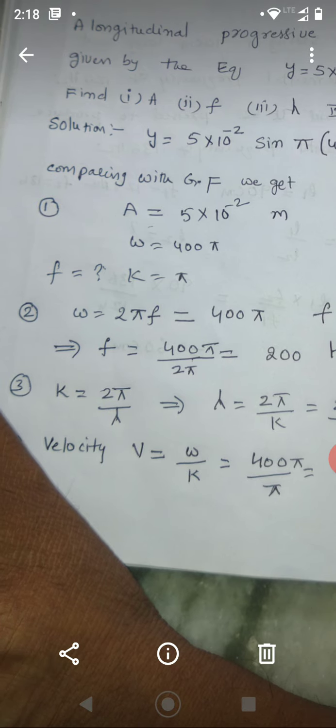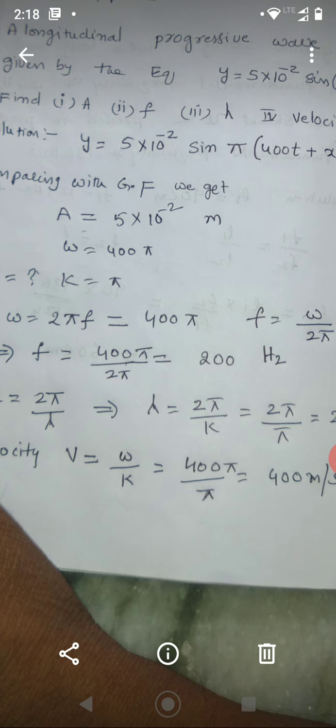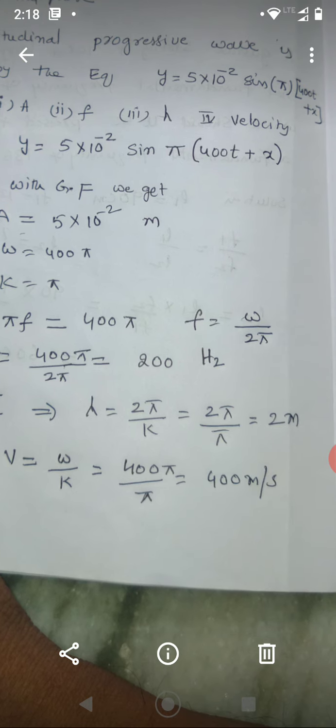Third one. You know that k equals 2 pi by lambda. From this, you will get lambda equals 2 pi by k. So, 2 pi by k is given as pi. So 2 pi by pi. Pi gets cancelled and you are getting 2. Lambda is wavelength and its units are meters.